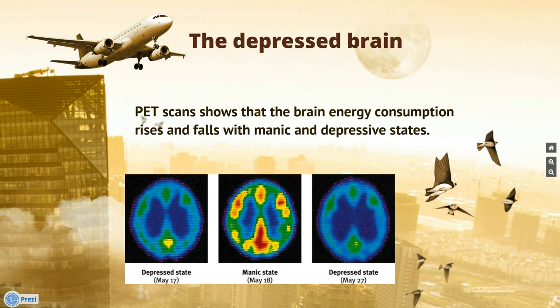As you can see in picture 1, the depressed brain is showing very little energy consumption. In picture 2, the manic brain is showing very high energy consumption levels. Nine days later, in picture 3, the brain once again is in a depressed state and is showing very little, if not any, energy consumption.